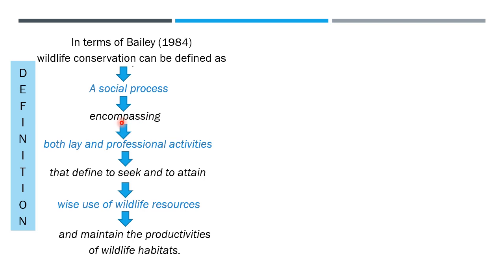Wildlife conservation encompasses both lay and professional activities. For example, if rhinos are getting poached in Kaziranga, even a common person can suggest that we need to increase the number of guards, equip them with the latest equipment, and provide motor boats for patrolling the Brahmaputra side of Kaziranga National Park. These are issues even a lay person can talk about. But there are certain professional activities also, which we will discuss in detail.